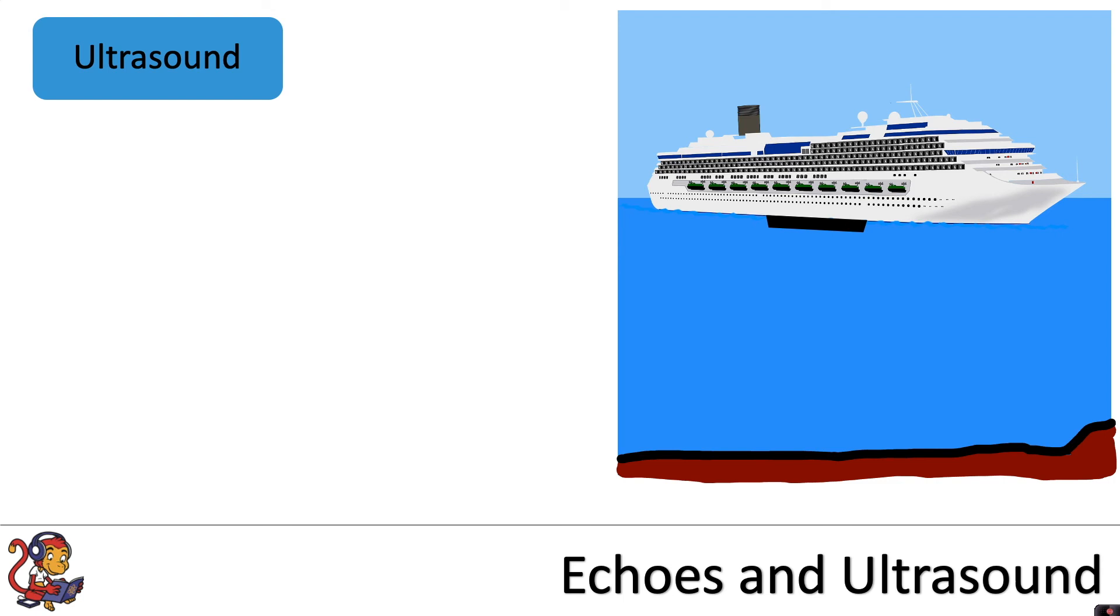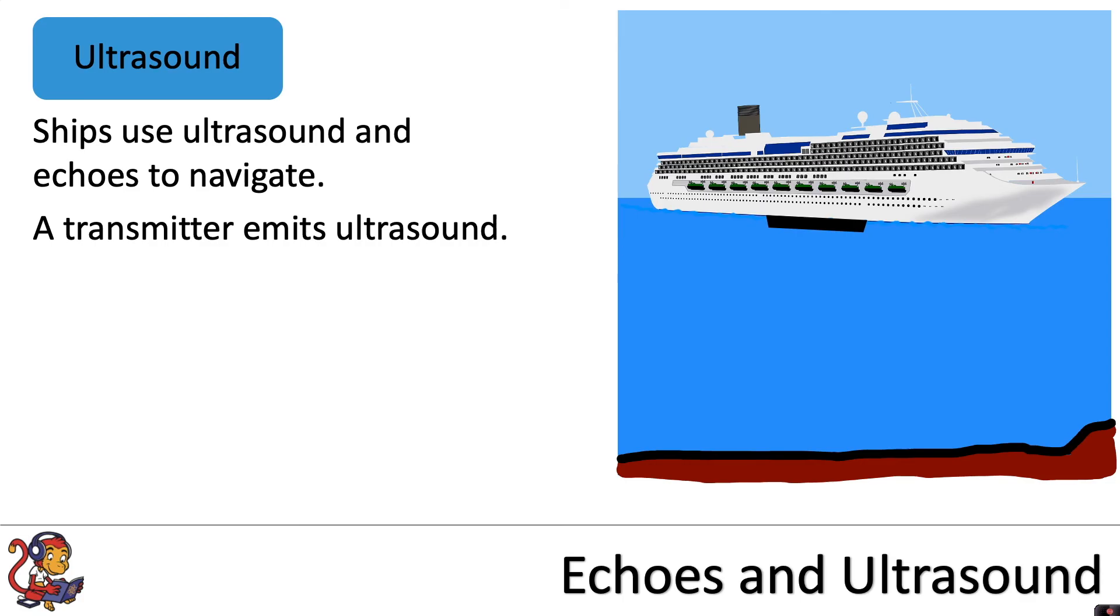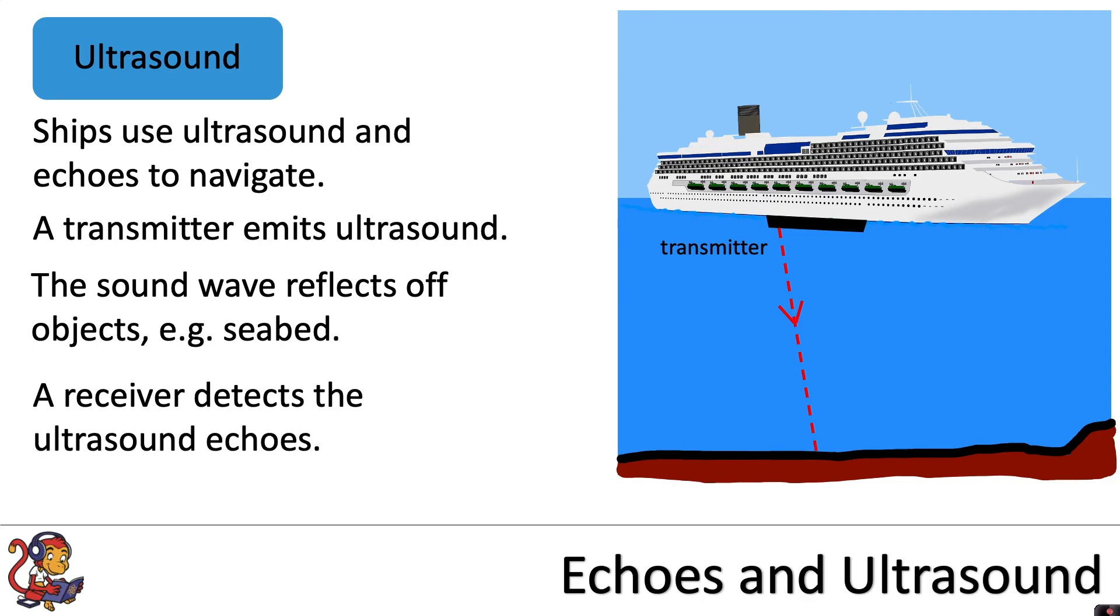As a final use, ships use ultrasound and echoes to navigate. A transmitter emits ultrasound waves, and the sound waves reflect off objects, for example the seabed. A receiver detects the ultrasound echoes.